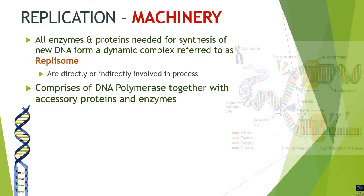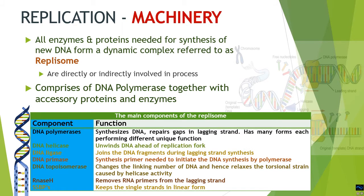All of the enzymes and proteins needed for the replication process are together called the replisome. This makes a dynamic complex in the cell, and they are directly or indirectly involved in the process. The main enzyme required for replication is DNA polymerase, which associates with other accessory proteins and enzymes during the replication process.